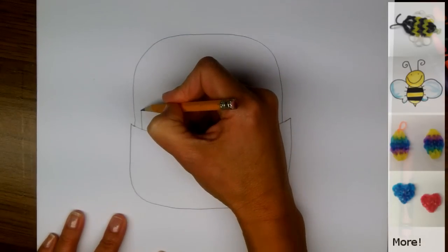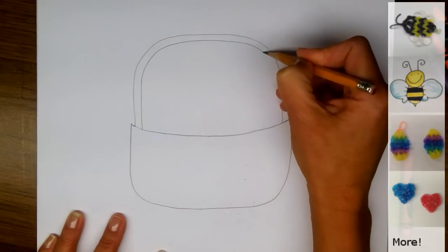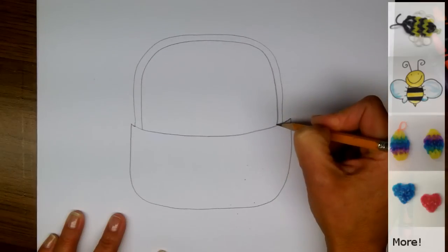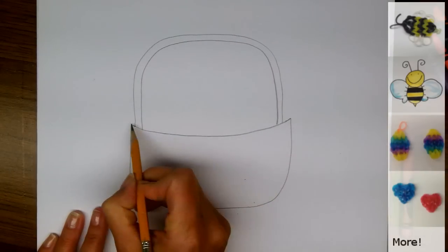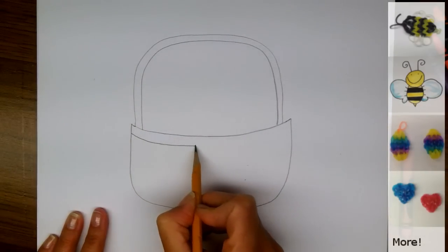We can draw the inside of our basket, so I'm going to draw a rim that goes along here.